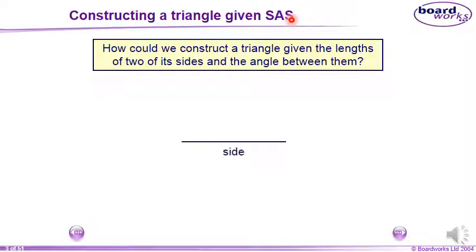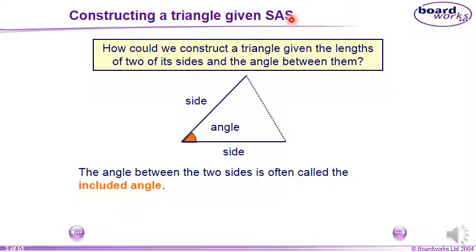So, starting with the first side and the second side, the angle is between the two sides. And by this, we have a triangle. Pay attention. The angle must be between the two sides.